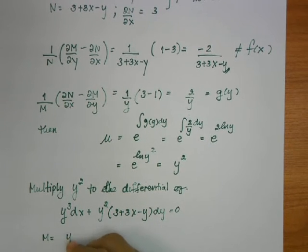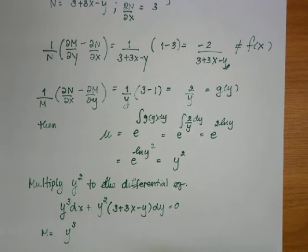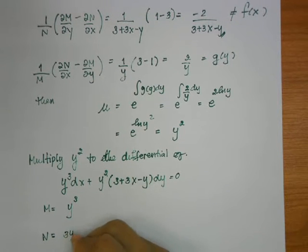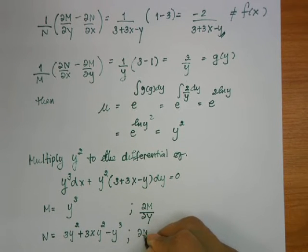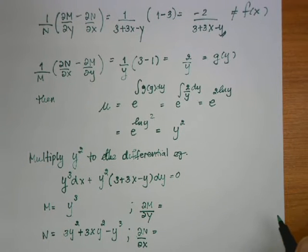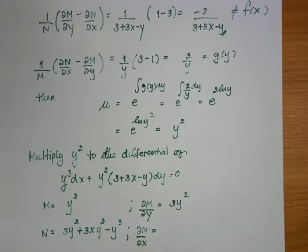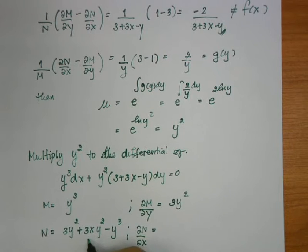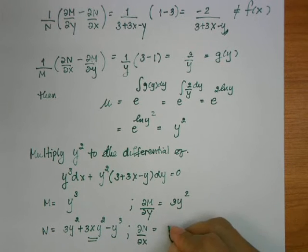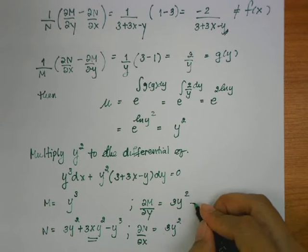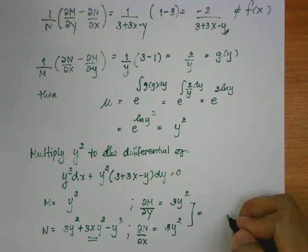Now we check again whether this differential equation is exact. M is now y³ and N is 3y² + 3xy² − y³. The derivative of M by y equals 3y². For ∂N/∂x, only the middle term contributes — the other terms are constant with respect to x — giving 3y². Both are equal, so this differential equation is now an exact equation.